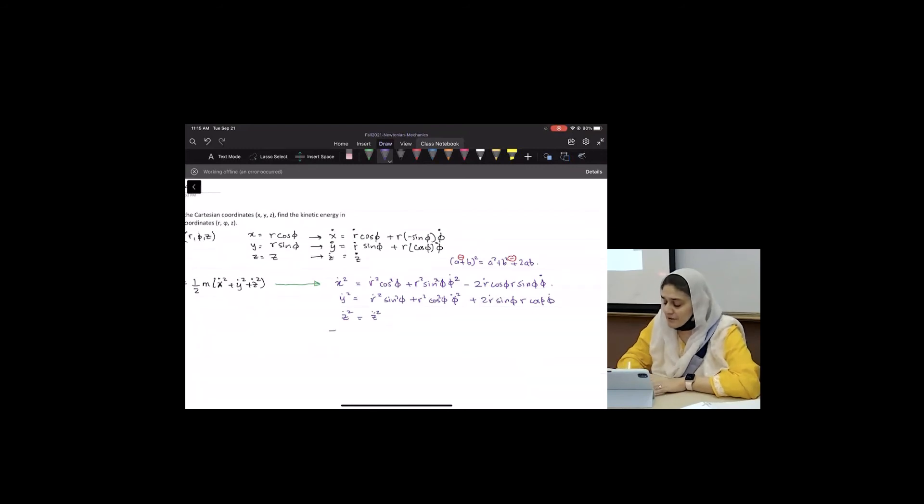And now can I add all of them? Anybody remember what cosine squared theta plus sine squared theta was? So do I get left with X dot squared plus Y dot squared plus Z dot squared equals R dot squared plus R squared phi dot squared? These two get cancelled, plus Z dot squared,